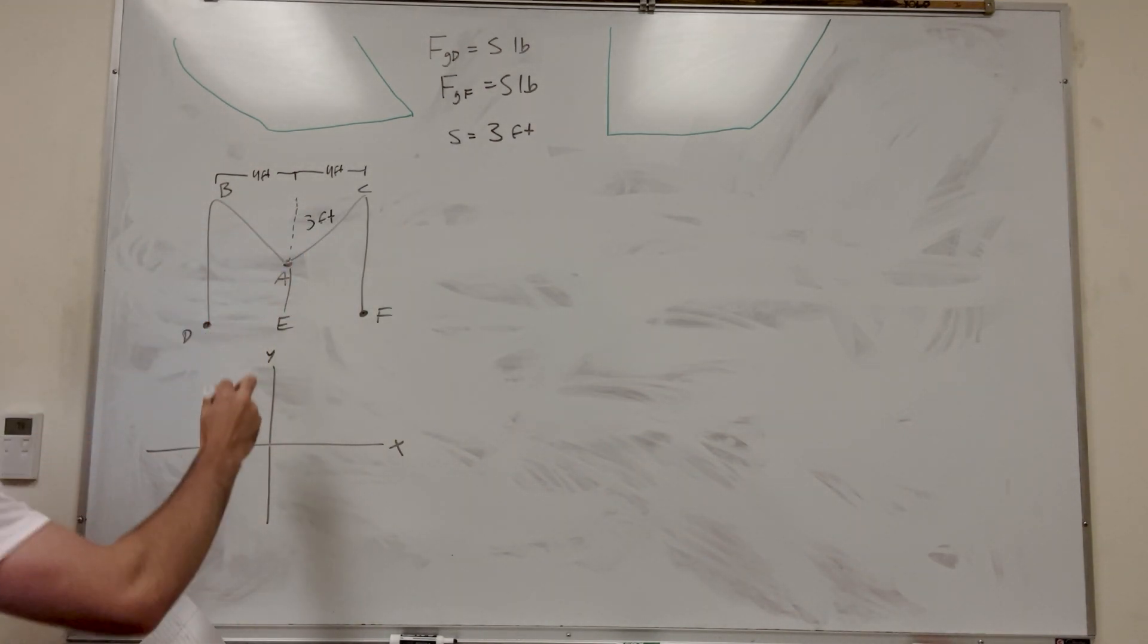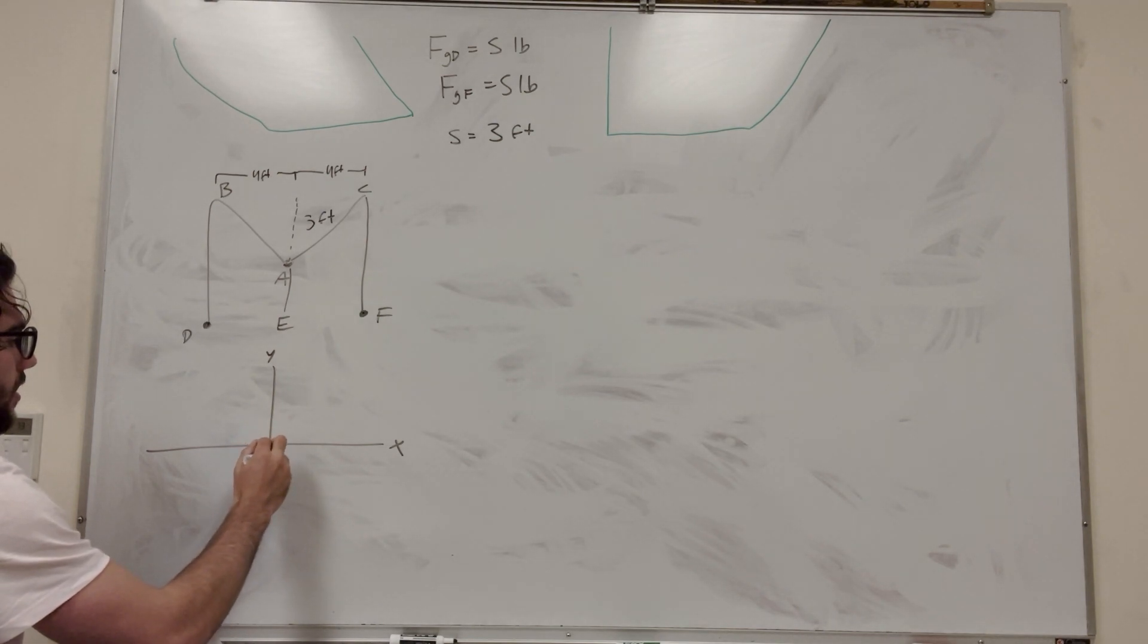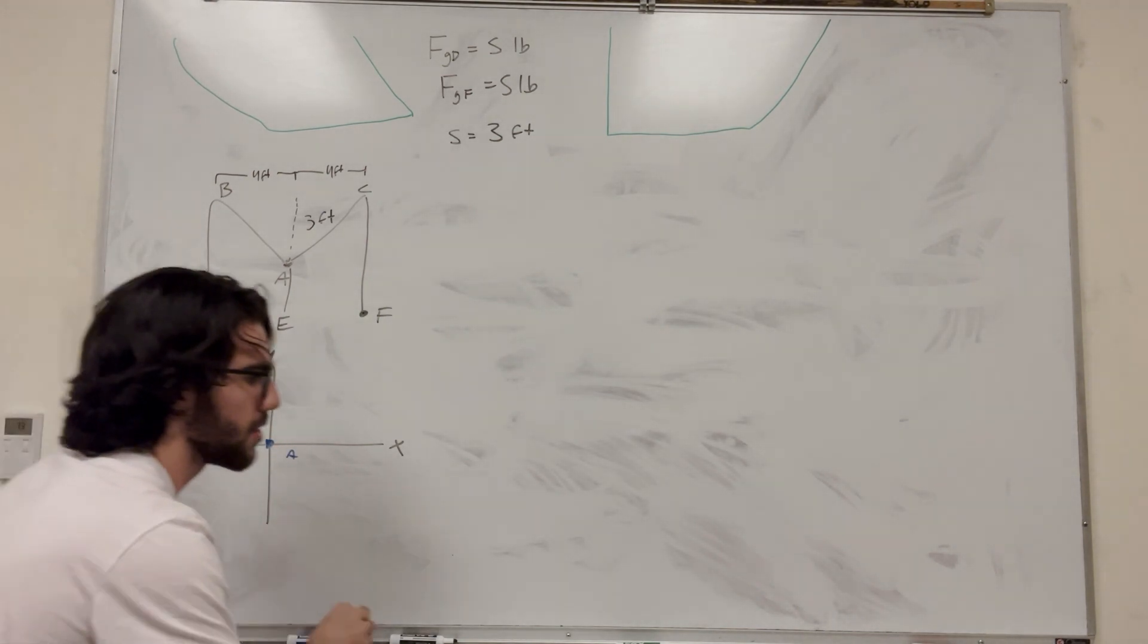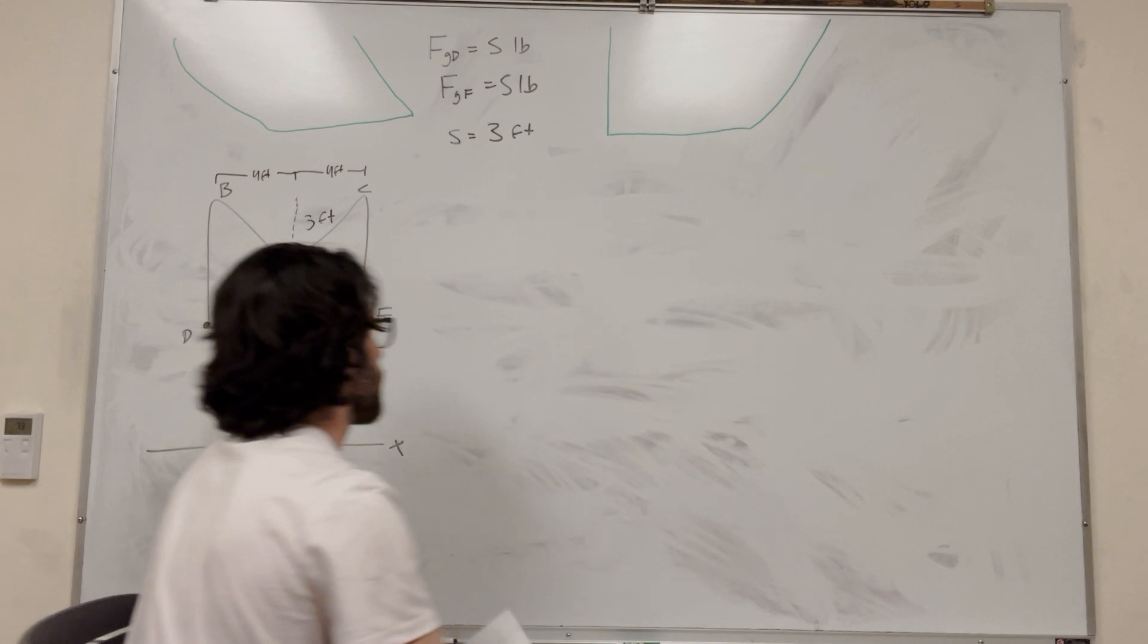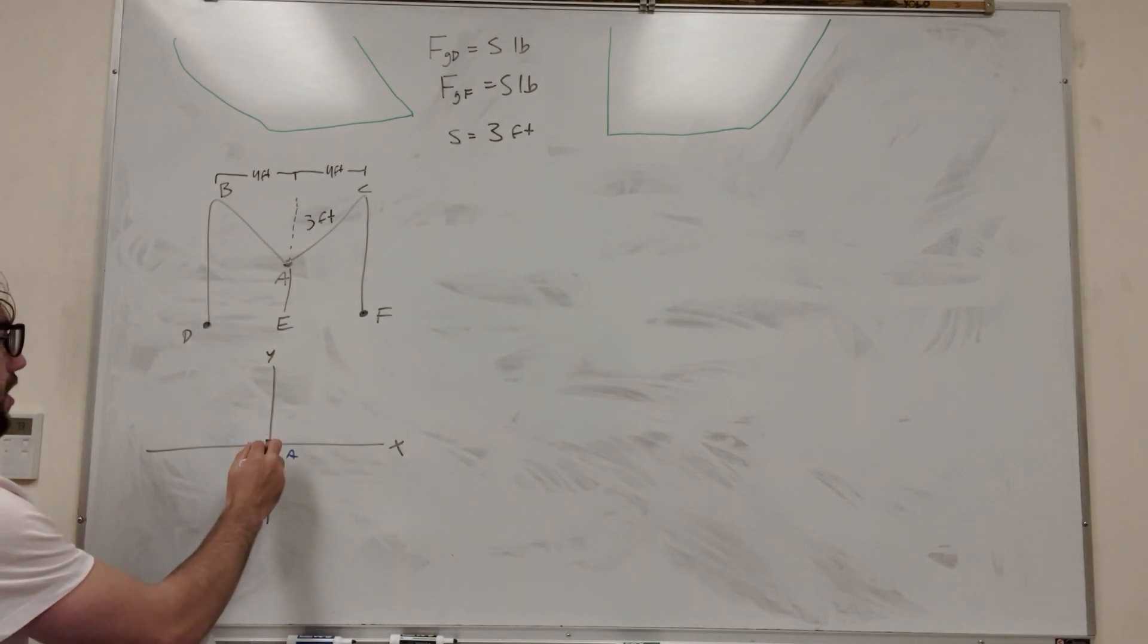This cable, this cable, and this cable. So this is point A. And what are our forces going to be? Well, of course, we have the force of gravity from E. We're going to label this F_G E.